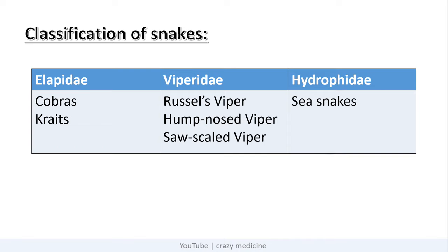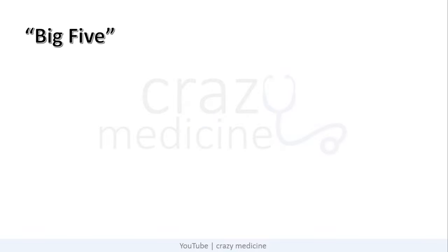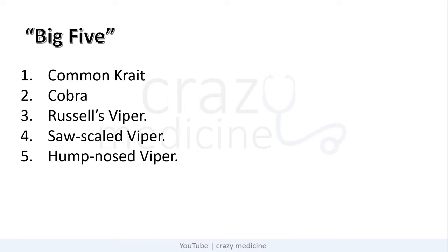An important point about sea snakes is that all sea snakes are poisonous in nature. The big five snakes found all over the world include common krait, cobra, Russell's viper, saw-scaled viper, and hump-nosed viper. But in India, the big four are the first four only, because our Indian ASV — that is anti-snake venom — does not contain anti-sera for hump-nosed viper. So the first four are known as the big four.